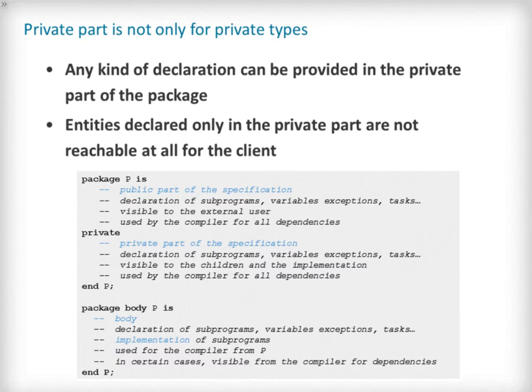The private section of a package specification is not restricted to only providing implementations for private types. As a reminder, the package user has no access to any part of the private section of a package specification. In summary, the package specification can be split into a public and private section, where the public view is visible to the package user and the private section is only visible to the package body and any child packages.